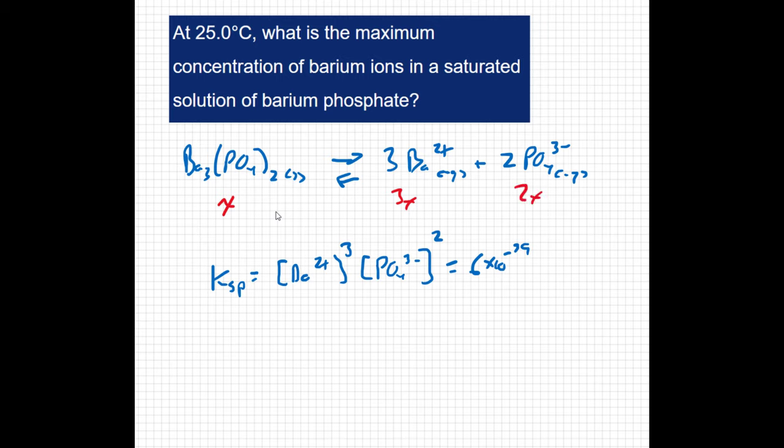So now we can plug those values into my Ksp expression. I can say 6 times 10 to the negative 39 equals 3X cubed times 2X squared. Again, this looks weird because you are tripling something and cubing it at the same time, doubling something and squaring it at the same time. It looks redundant.